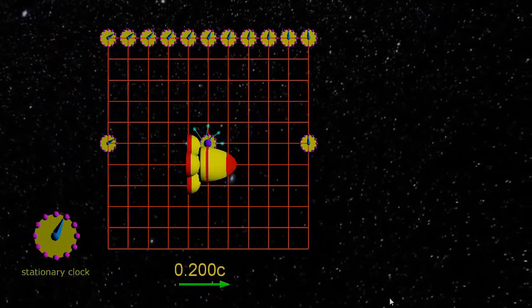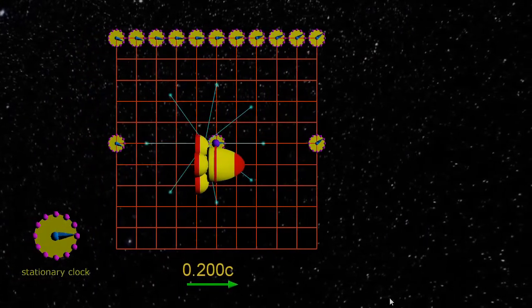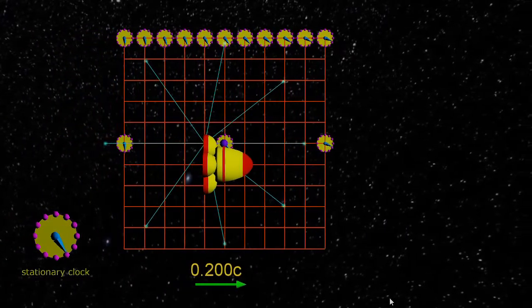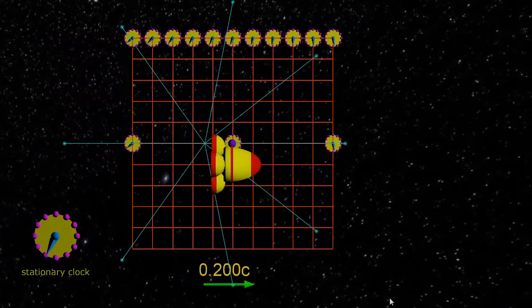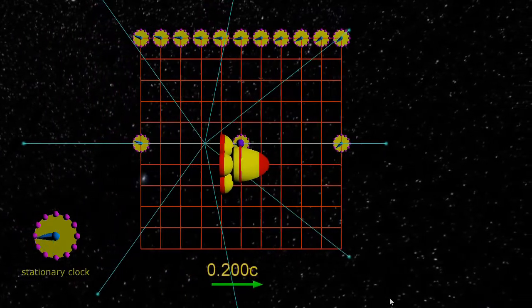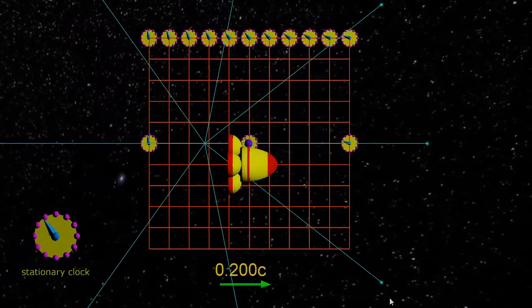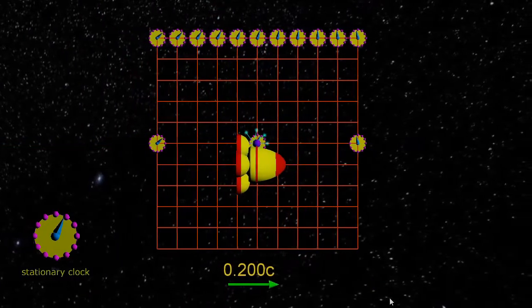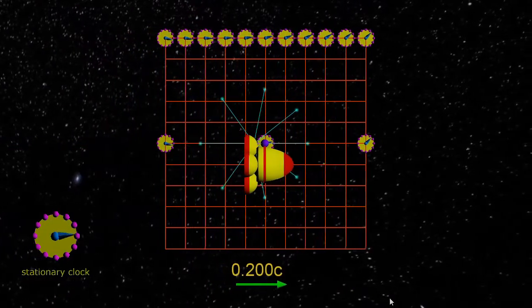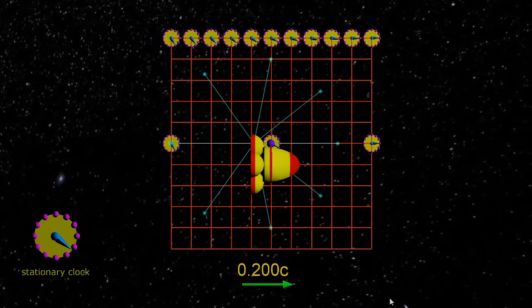Because when the light was emitted, moving out at c, as the left photon moved towards the left, the left side of the grid was coming up to meet it. And so it ends up arriving at the left side of the grid before the right photon can get to its last intersection.